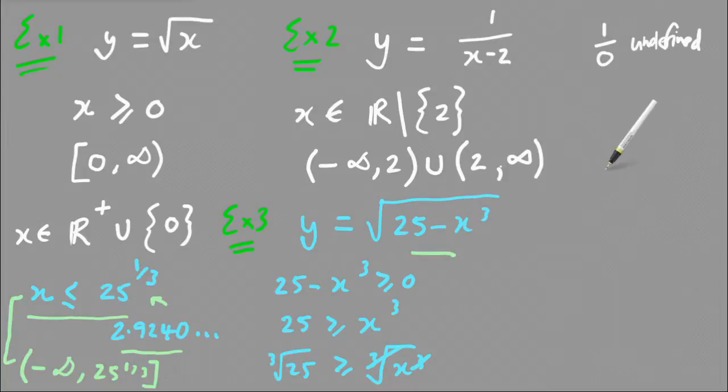And there's one more example I wanted to do. So example 4, if you have x, sorry, y equals 1 on the square root of x. Now, once again,